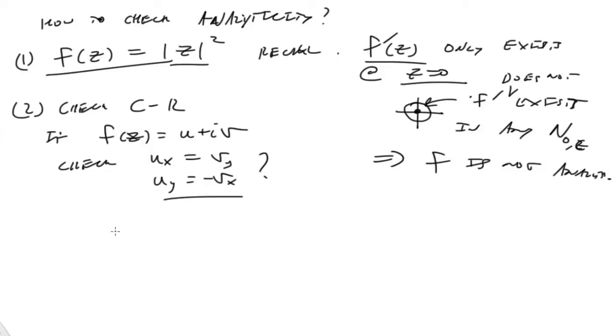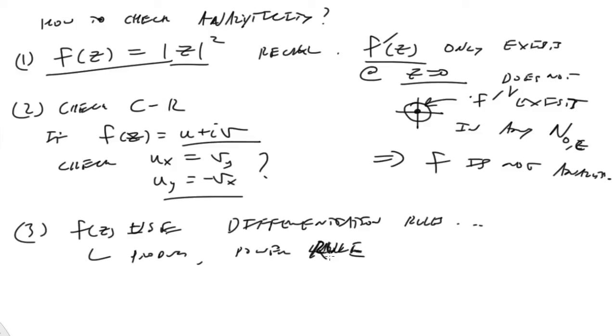So we can, of course, do an example of that. And another way to check is to use differentiation rules. You know, like the power rule, product, chain rule, quotient rule, and so on and so forth. If you can take these derivatives and they're all defined at the point, then of course, the function is analytic, provided it's analytic in that neighborhood.